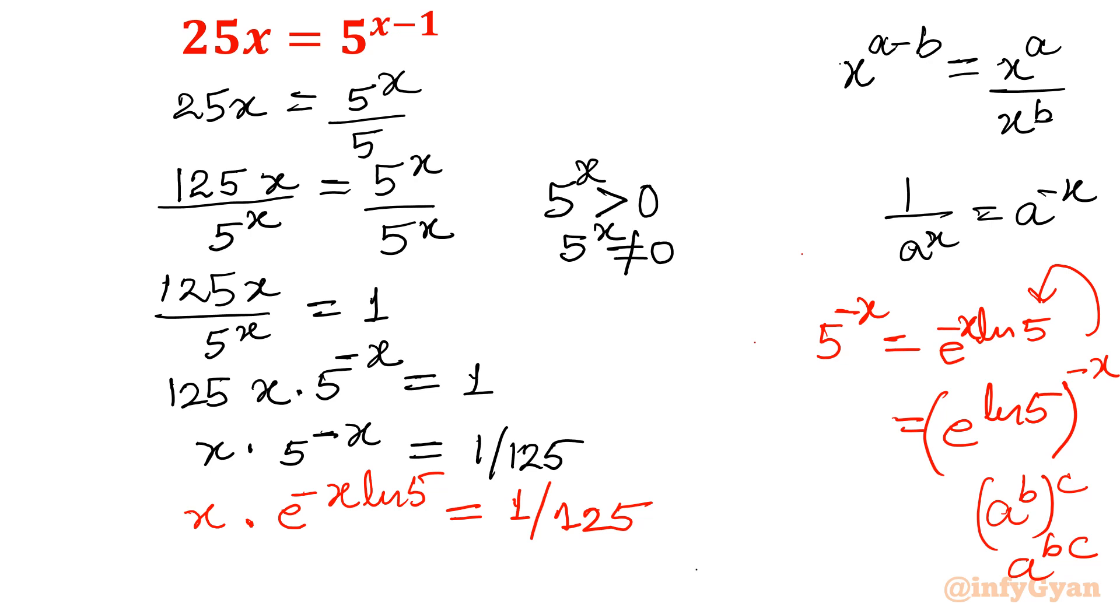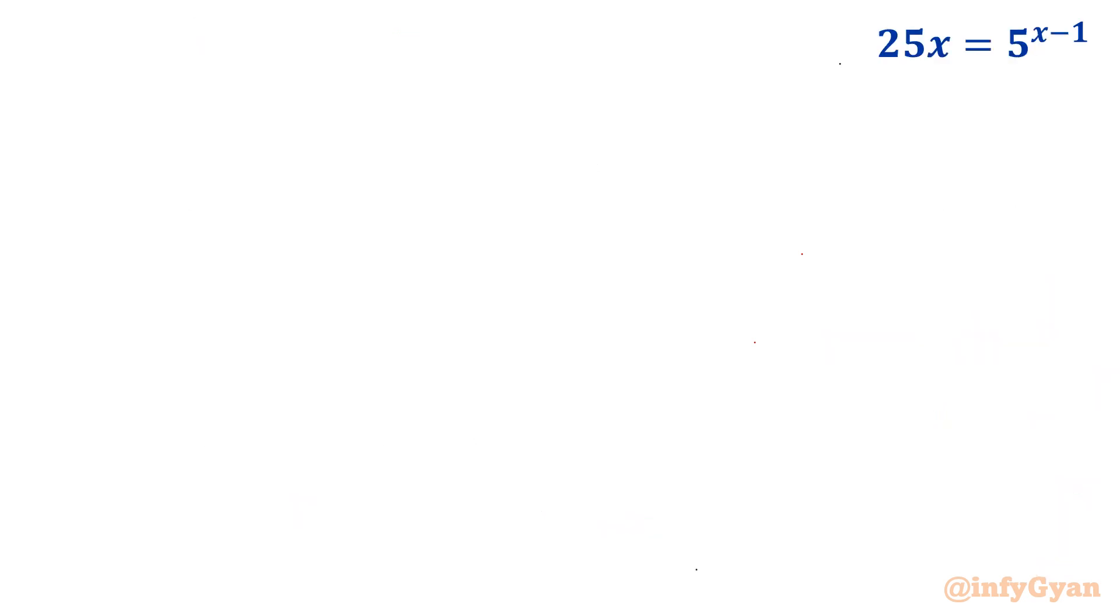Now we have to observe which term is missing. Let me write here: x times e raised to the power minus x ln 5 equal to 1 over 125. Now you can see easily. My target is straight away clear.